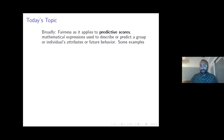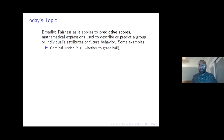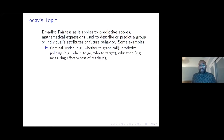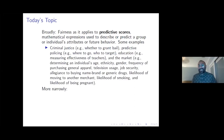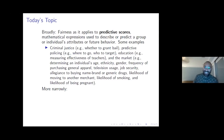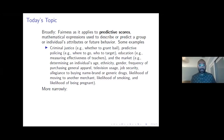Some quick examples of how predictive scores have been used: in criminal justice, for example, whether to grant bail; predictive policing, figuring out where to send officers or who to target; education, such as determining the effectiveness of teachers. And in the market, predictive scores have been used to determine consumers' age, ethnicity, gender, frequency of purchasing, television usage, job security, likelihood of moving to another merchant, likelihood of smoking, and maybe most famously, likelihood of being pregnant. There are hundreds, maybe thousands more scores in the context of the market.